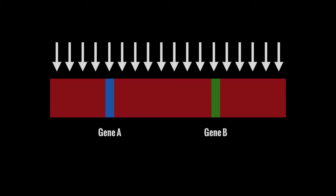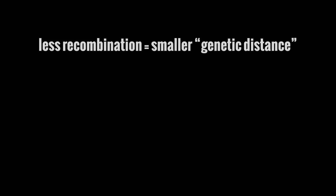The farther apart these two genes are, the more likely it is they're going to get cut apart. The closer these two genes are on the chromosome, the less likely it is that they're going to get cut apart and be used to create recombinant DNA. Less recombination equals a smaller genetic distance. Genetic distance is just the relative distance between two genes on a chromosome.